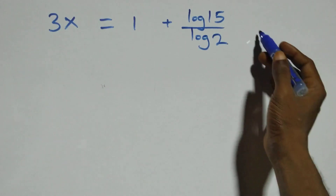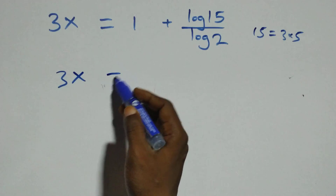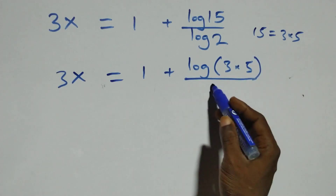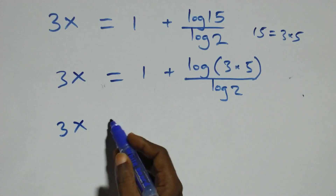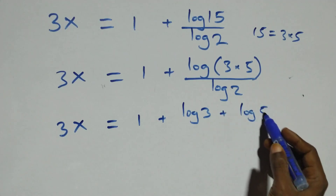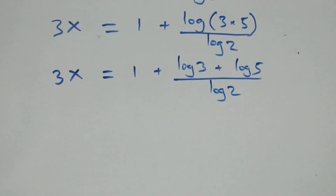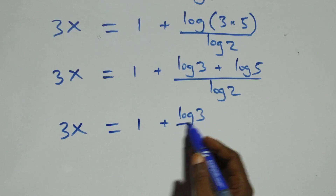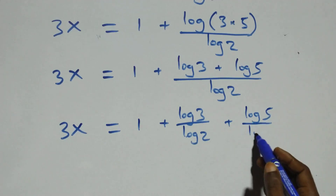Next, fifteen can be written as three times five. So three x equals one plus log of three times five, over log two. This also follows the law of logarithm, giving three x equals one plus log three plus log five, over log two. We separate this into two fractions: three x equals one plus log three over log two, plus log five over log two.